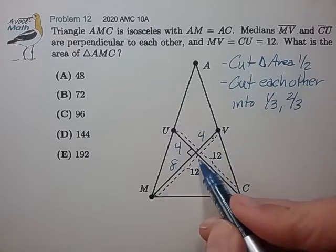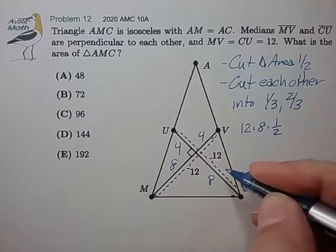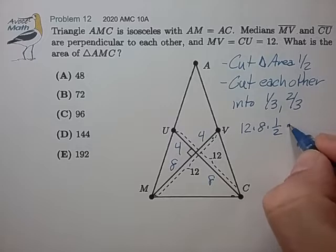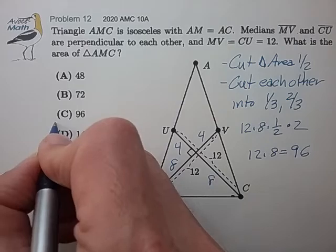Base length of 12, altitude of 8, doubling to get the area of the full triangle, 96. Final answer.